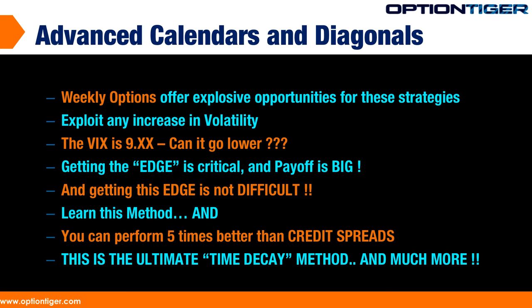The good thing about this strategy is that you can exploit any increase in volatility. Right now the VIX is at 9 and 10 — it's never gone below 9 as far as I know, so we're really at the low end. Any increase in the VIX or increase in volatility, which is very possible from various directions, really kicks up the profits of the calendars and diagonals and their doubles.